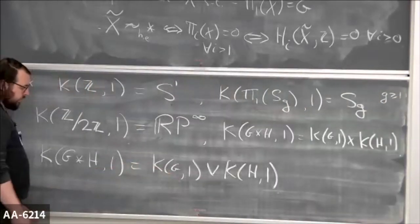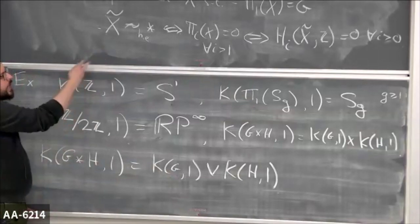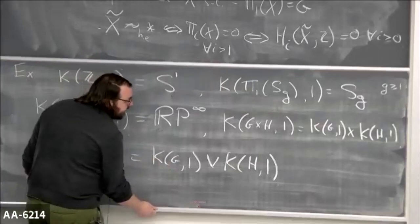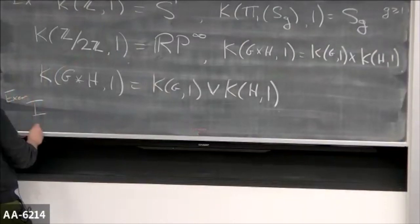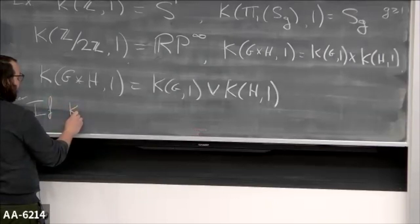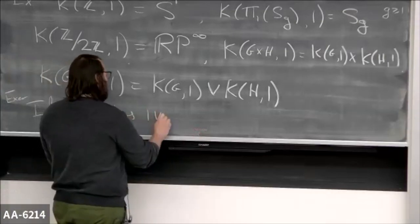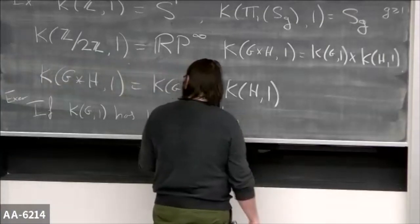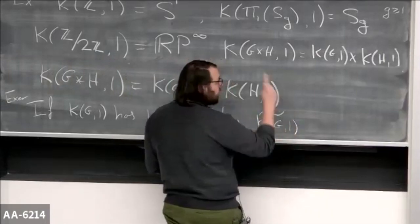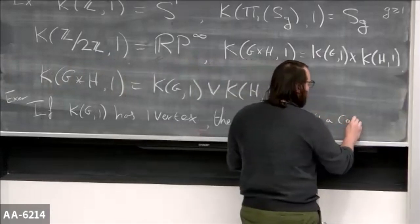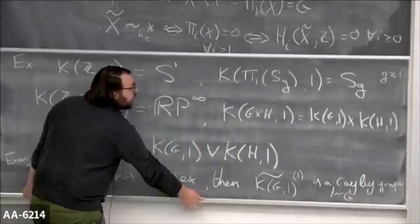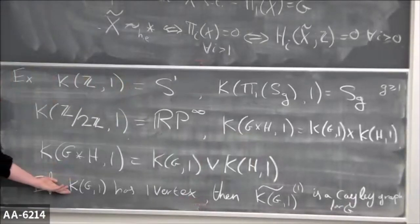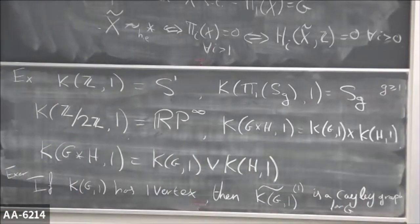Some general theorems: if you want a classifying space for a product of groups, you can take a product of the classifying spaces, so you know how to get classifying spaces for free abelian groups. For a free product you can take a wedge sum. There are uncountably many classifying spaces for a group but they're all homotopy equivalent. A nice fact: if the classifying space has one vertex, then its one-skeleton in the universal cover is a Cayley graph for G — these classifying spaces are intimately related to Cayley graphs.